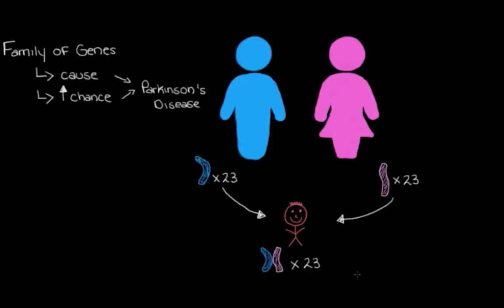So that means that we have two copies of each gene. One copy came from your mom, and one copy came from your dad.